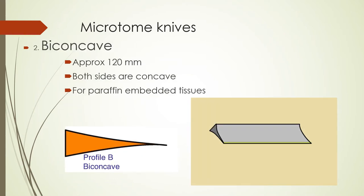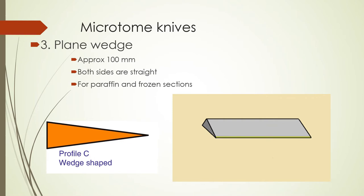Moving on to the biconcave knife — it is approximately 120 millimeters long, about 16 millimeters longer than the planoconcave, and both sides are concave. It is used for paraffin-embedded tissues. And lastly, we have the plain wedge knife. It is approximately 100 millimeters long, both sides are straight, and it is used for paraffin and frozen sections.